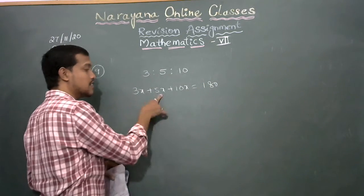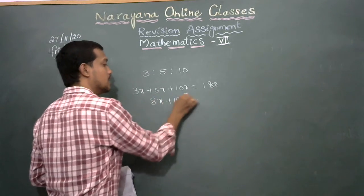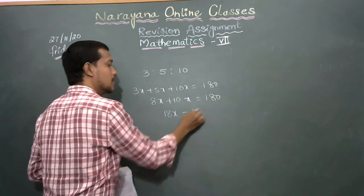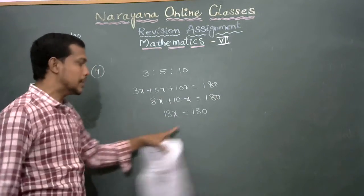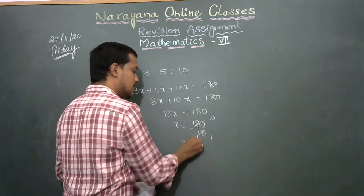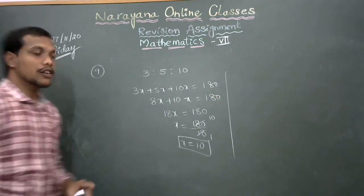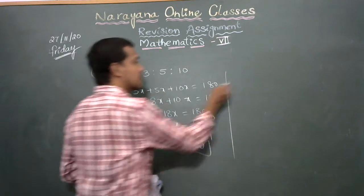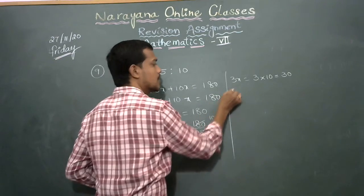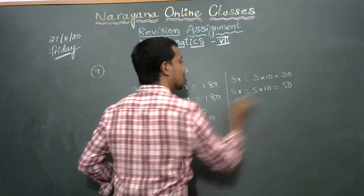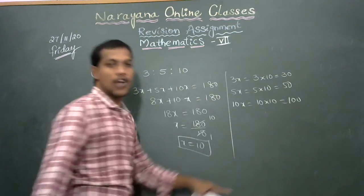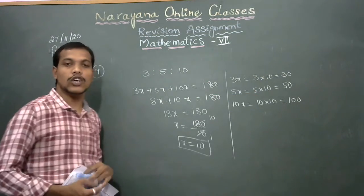Adding: 3x plus 5x equals 8x, and 8x plus 10x equals 18x. So 18x equals 180, which means x equals 180 divided by 18, therefore x equals 10. Now, 3x equals 3 times 10 equals 30 degrees, 5x equals 5 times 10 equals 50 degrees, and 10x equals 10 times 10 equals 100 degrees. Verification: 30 plus 50 plus 100 equals 180.